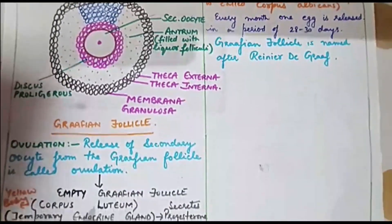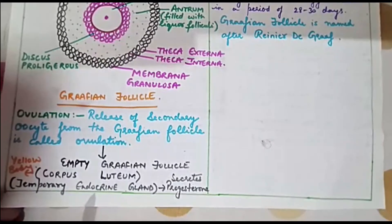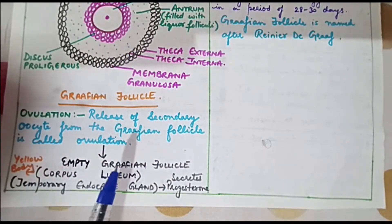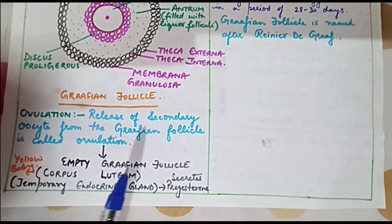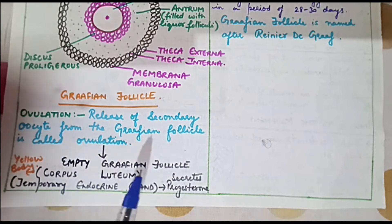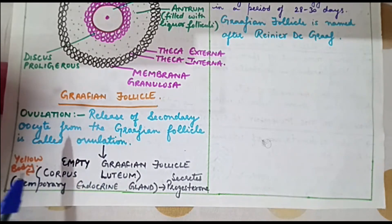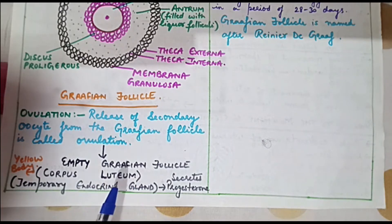After the release of secondary oocyte, the Graafian follicle becomes empty. This empty Graafian follicle is known by the name of corpus luteum, and this word denotes a yellowish body. Corpus luteum is a yellow body and it acts as a temporary endocrine gland in females.